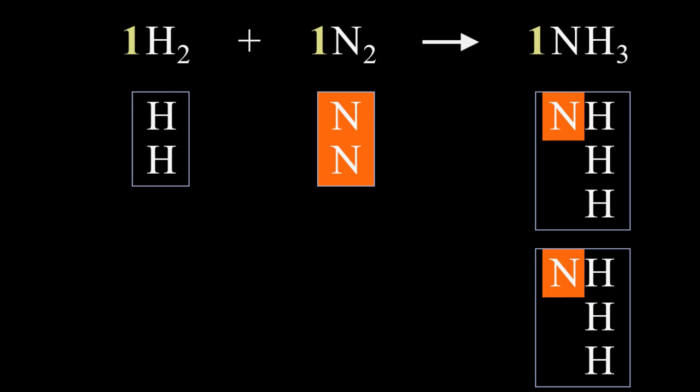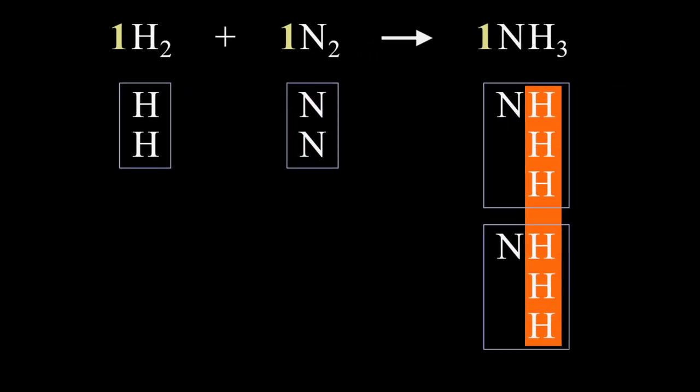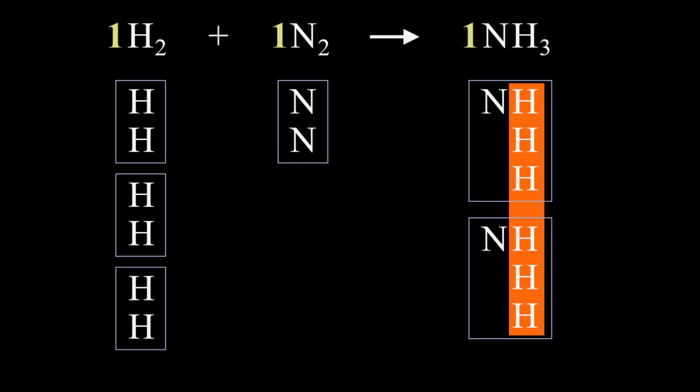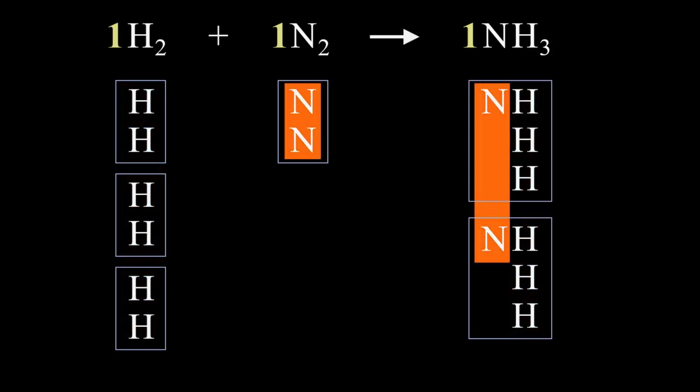With 2 NH3 boxes there are now 6 hydrogens on the right, and so we need to add 2 more hydrogen boxes to give a total of 6 hydrogens on the left. Visually this method makes it easy to see there are now 6 hydrogens on both sides of the arrow, and 2 nitrogens on both sides.